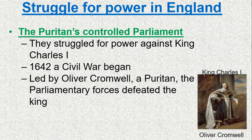The struggle for power in England is always an issue and has been for a long time. Religion was definitely tied into that — the Puritans had controlled Parliament for quite a while. Oliver Cromwell, a Puritan, overthrew the monarchy, establishing a Puritan-type government against King Charles I. A civil war began, which pretty significantly slowed down the great migration of New Englanders to the Massachusetts Bay and Plymouth colonies.